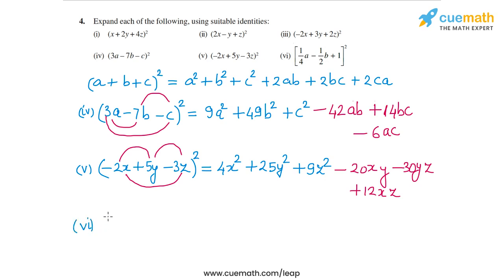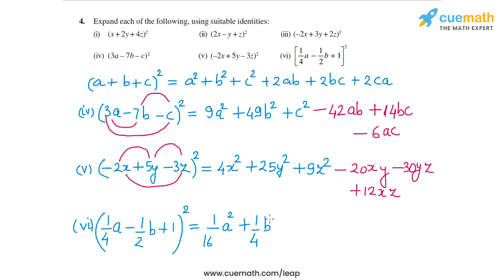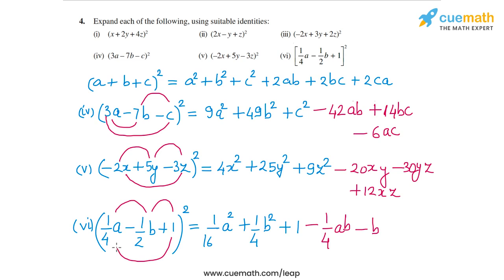Finally, the sixth one is (¼a - ½b + 1)². This expands as (¼a)² = 1/16 a², plus (-½b)² = ¼b², plus 1² = 1. For the cross terms: 2ab = 2 × (¼a) × (-½b) = -¼ab; then 2bc = 2 × (-½b) × 1 = -b; and 2ca = 2 × (¼a) × 1 = ½a. So this is the expanded form of the sixth part, and with that question 4 is completed.